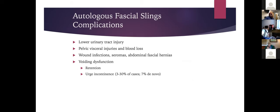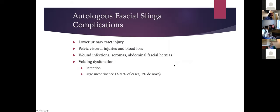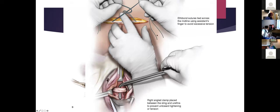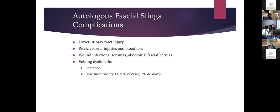Complications of the autologous fascial sling include lower urinary tract injury, pelvic visceral injuries, blood loss, wound infections, seromas, and abdominal fascial hernias. There is a higher risk of voiding dysfunction because the sling is placed closer to the bladder neck and is tensioned somewhat tighter than synthetic slings, increasing the risk of urinary retention and de novo urge incontinence.